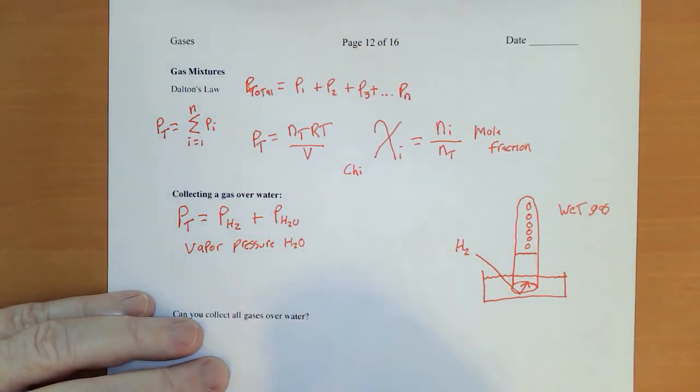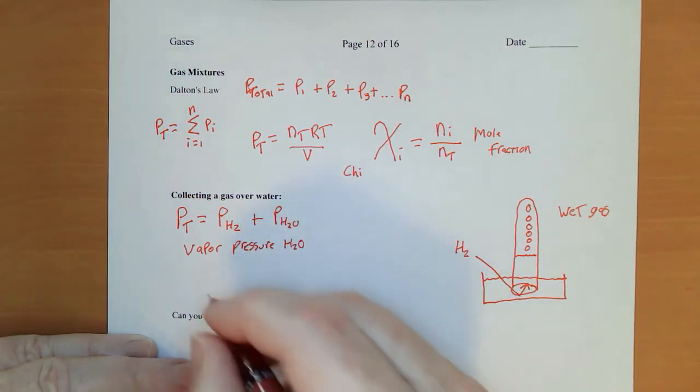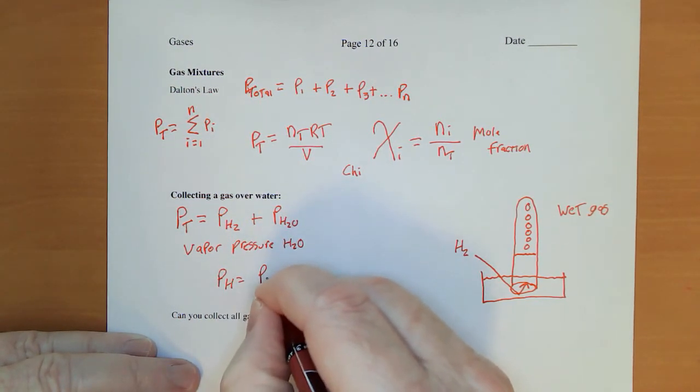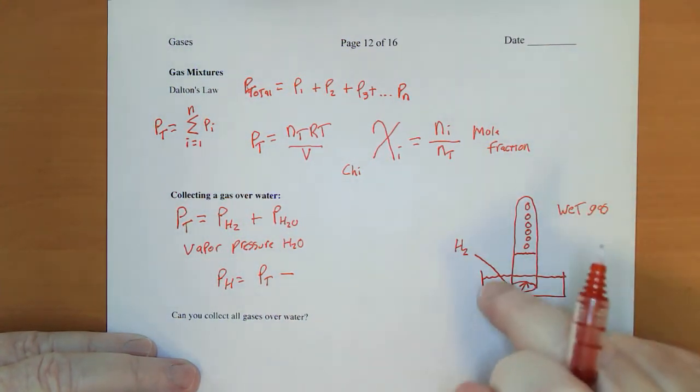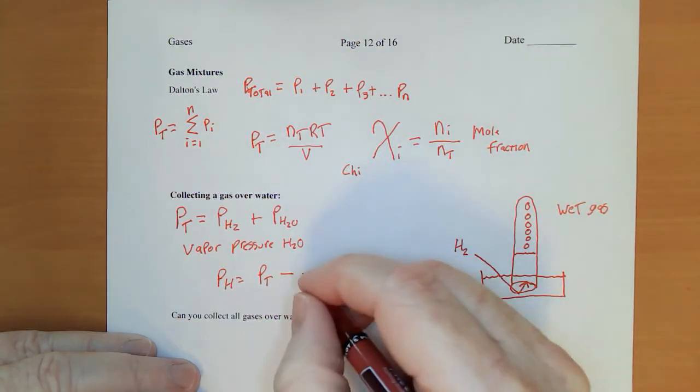Now we are probably only interested in the vapor pressure of the hydrogen. So we read the barometer on the wall, get the total pressure, we look for the temperature, generally just a thermometer into this tub of water.